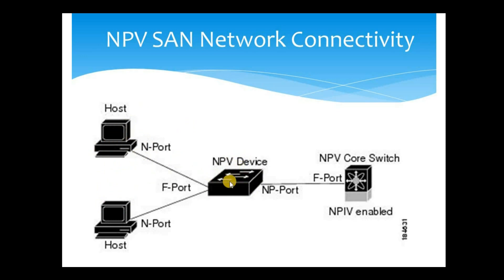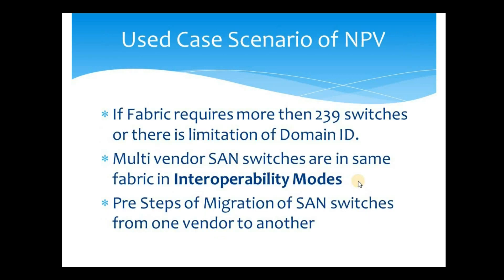Now if this device is NPV-enabled, whenever a host connects to this NPV device and sends a request for the FLOGI process, instead of processing that request, this device will bypass the request to the uplink switch — that is, the core switch. The FCID allocation will happen from the core switch, not from the switch where the hosts are connected. Similarly, apart from FCID allocation, whatever requests this NPV device gets from connected devices, it will bypass those requests to its uplink switch.